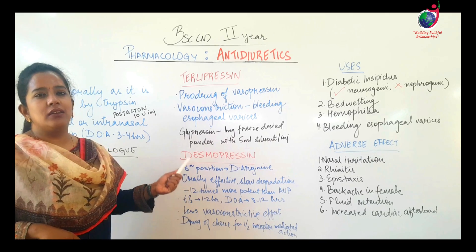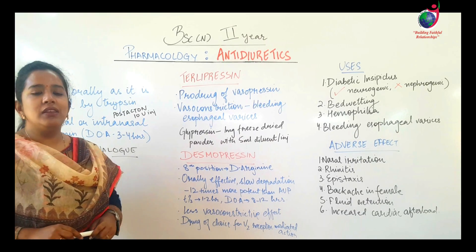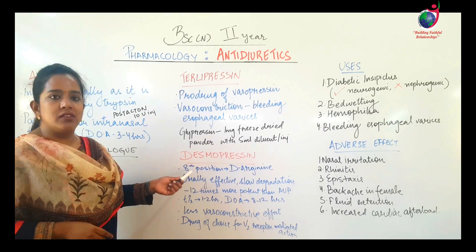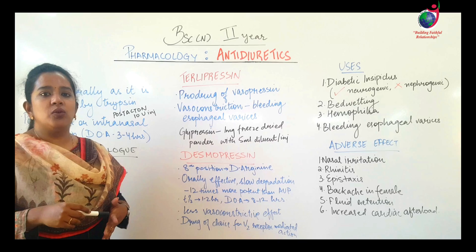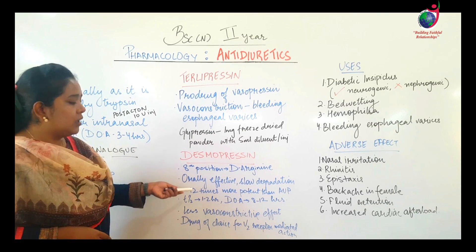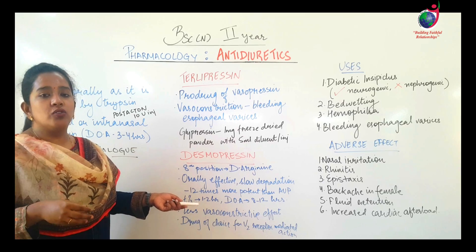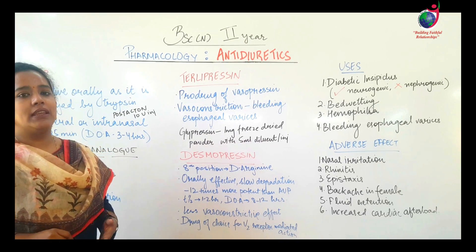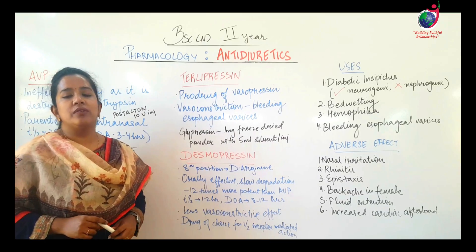Desmopressin is a very good synthetic drug and the best choice for V2 receptor-mediated actions. In the 8th position, arginine is replaced by d-arginine, hence the name desmopressin. It is orally effective, unlike AVP. Its degradation by peptidases is very slow, so it has a long duration. Its potency and efficacy are 12 times more than AVP; plasma half-life is around 1–2 hours and total duration is around 8–12 hours. V2 action is very good, but V1 action is minimal, so it has no significant vasoconstrictive properties.